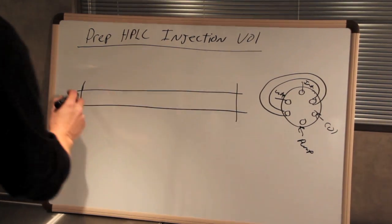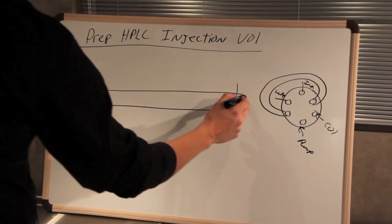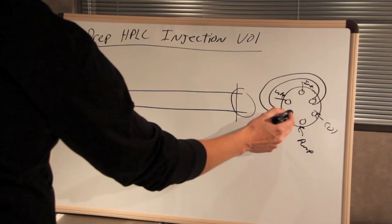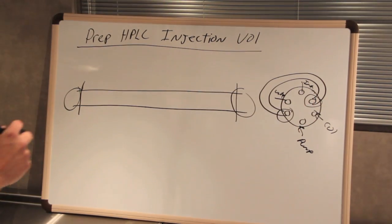So this is actually your injection loop, and right here and right here is where your injection loop is plugging into the valve.